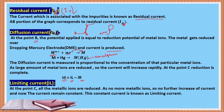What is limiting current? At point C, all the metal ions are reduced — there are no more metal ions remaining. So there is no further increase of current and the current remains constant. This constant current is known as limiting current.